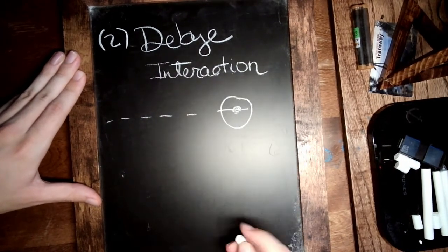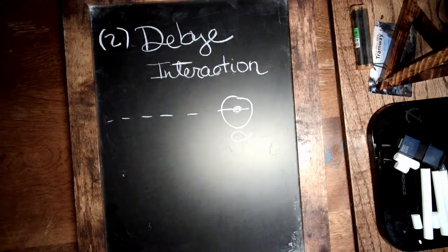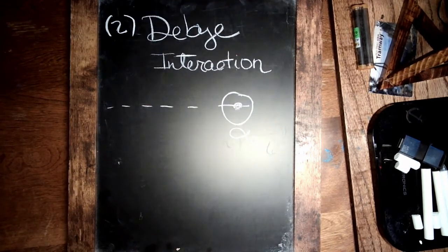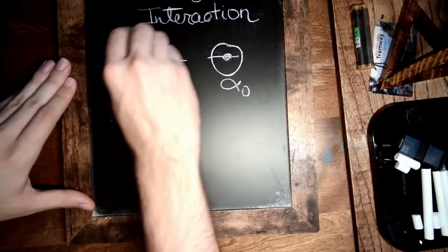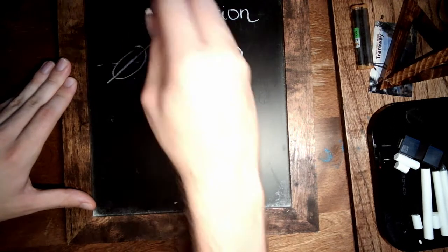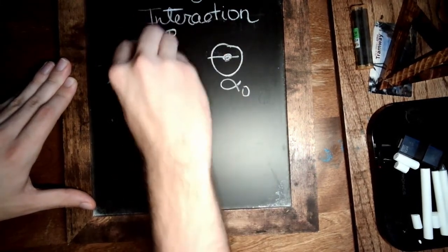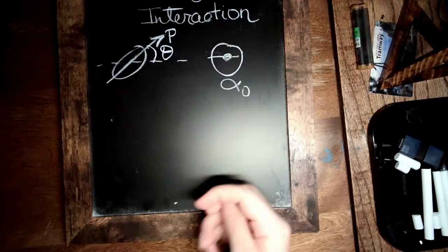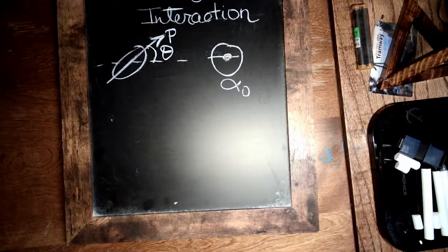a neutral atom that's polarizable though. It has an atomic polarizability, alpha zero. And the thing doing the polarizing is going to be this dipole. So similar to before, we can give it a magnitude P and define an angle theta, which is its angle relative to the line that would connect the two objects.